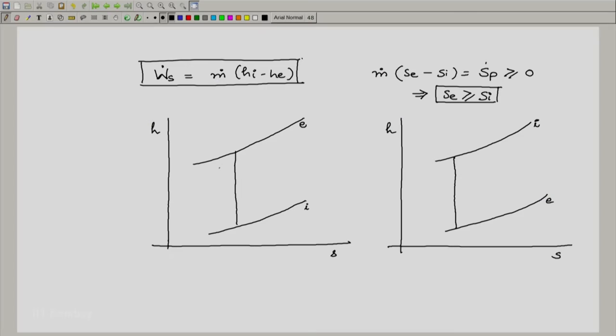This is the reason for drawing the isobars in this fashion. We'll show the process for a compressor: we're going from the inlet state here to the exit state here. This is the ideal process where the inlet entropy is the same as the exit entropy, drawn as a straight vertical line.